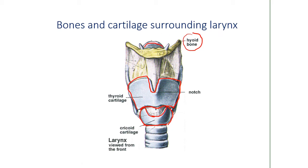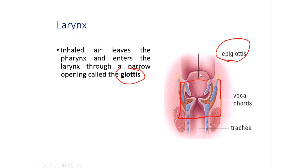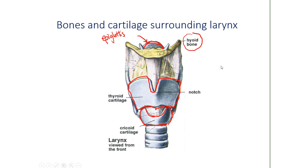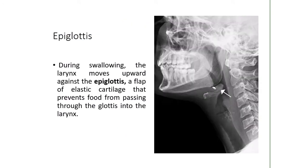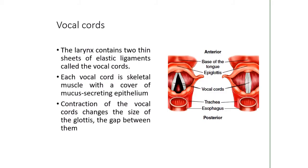The epiglottis is shown here in an X-ray. The epiglottis actually doesn't really move — some people think it goes up and down to cover the glottis, but that's not true. The epiglottis is stationary; it's the larynx that pushes up against the epiglottis when you swallow. You can feel this by placing your hand around your neck area and swallowing — you'll feel the larynx push up. That's how the glottis gets sealed.